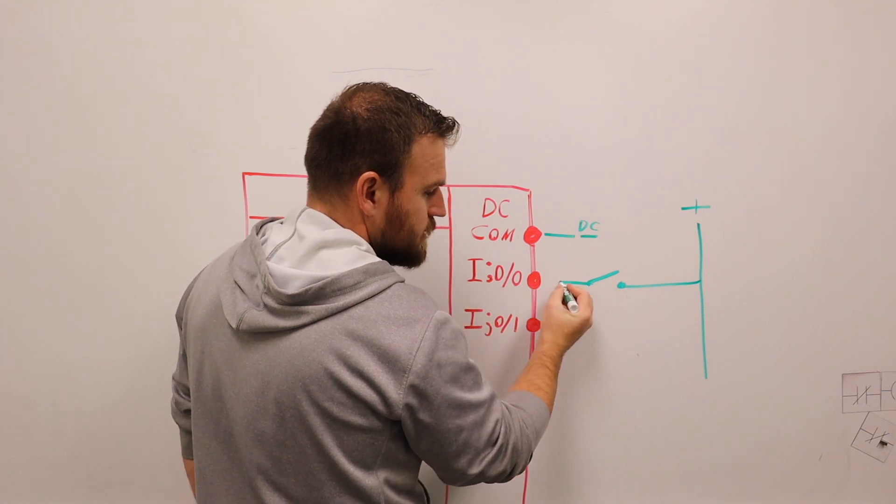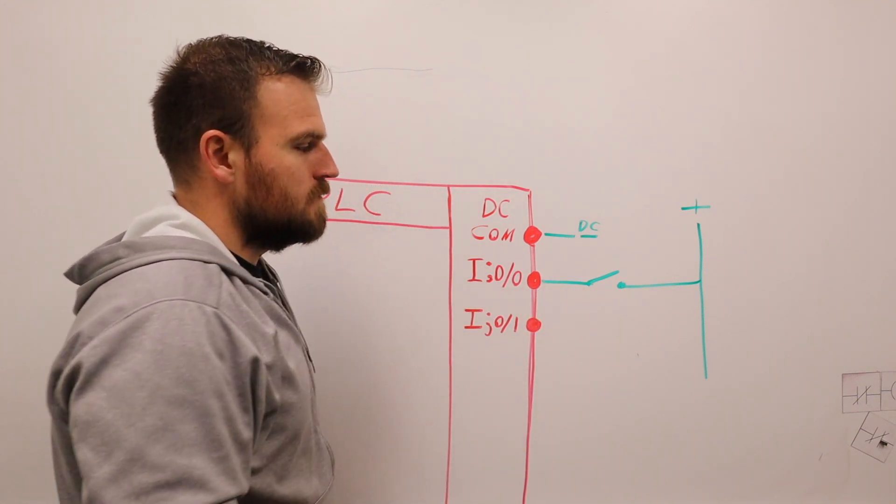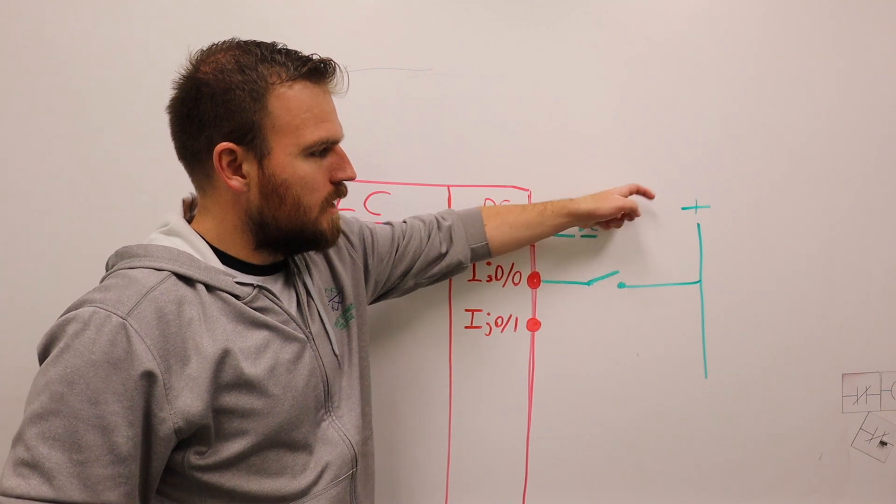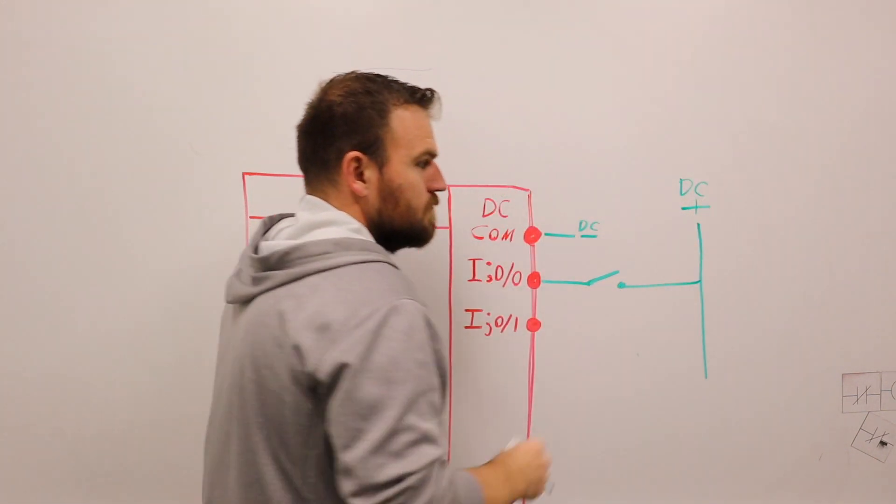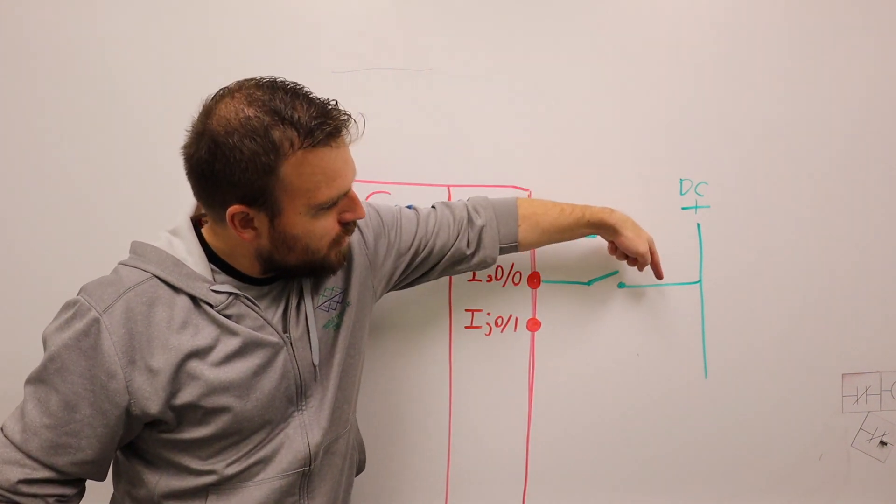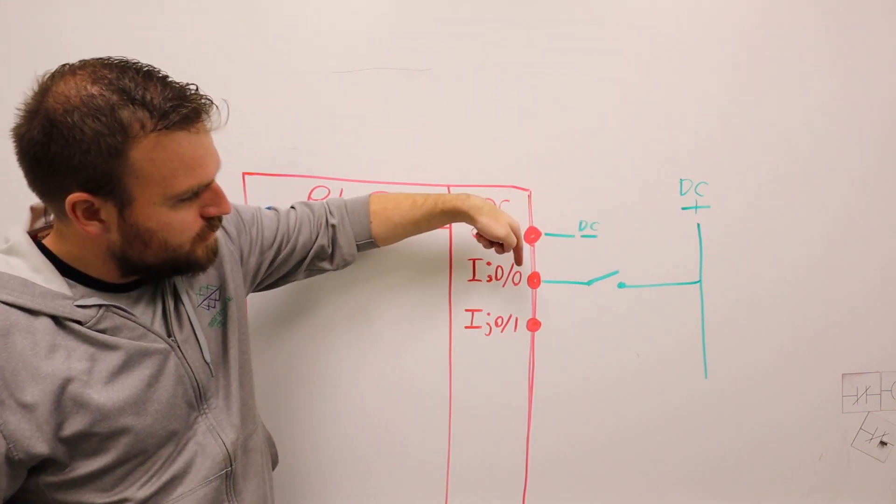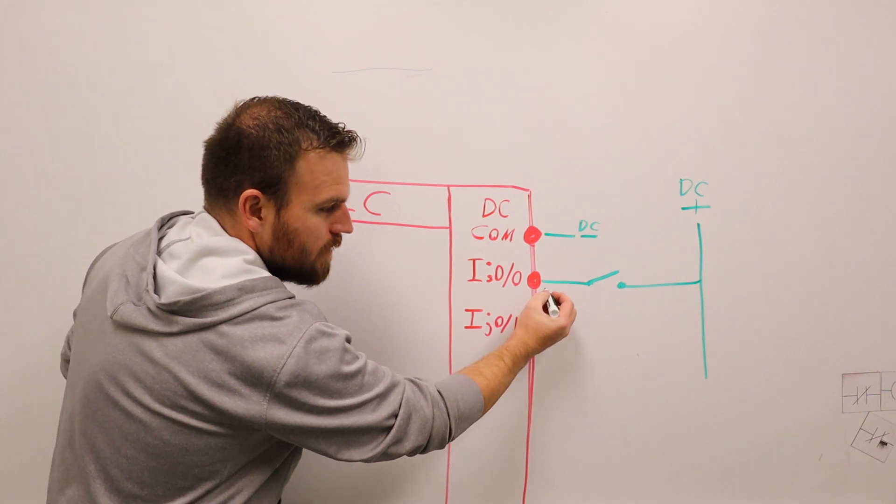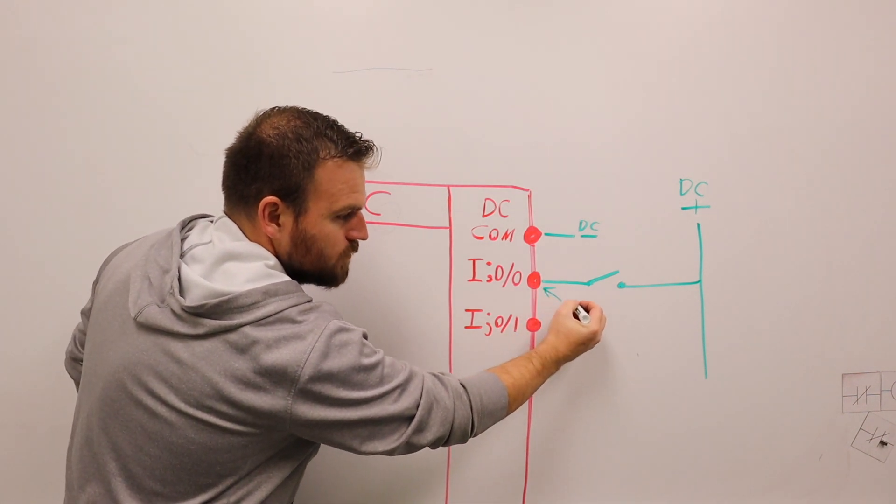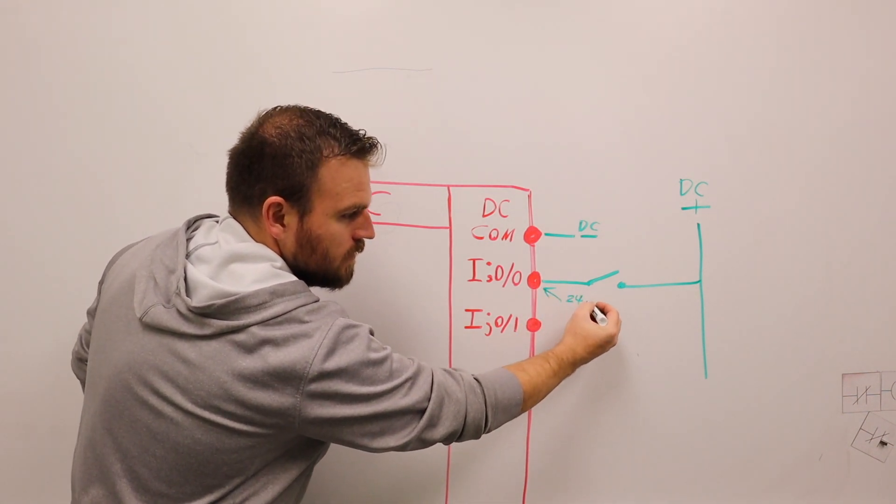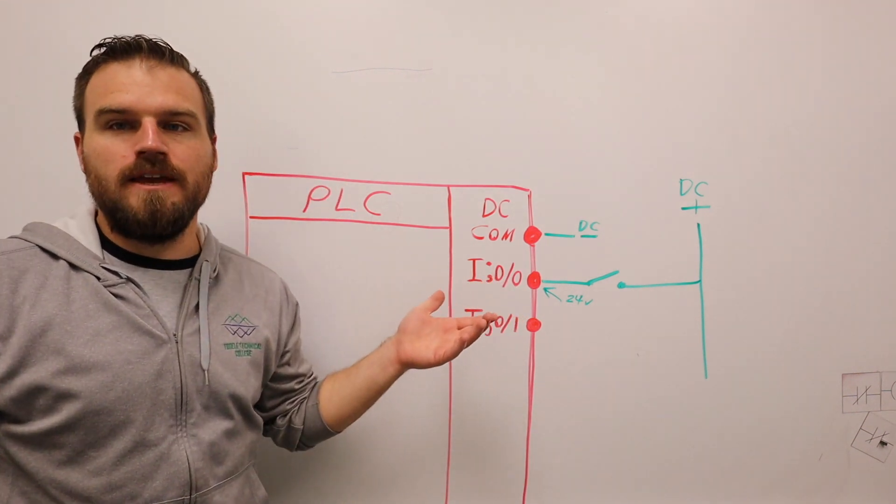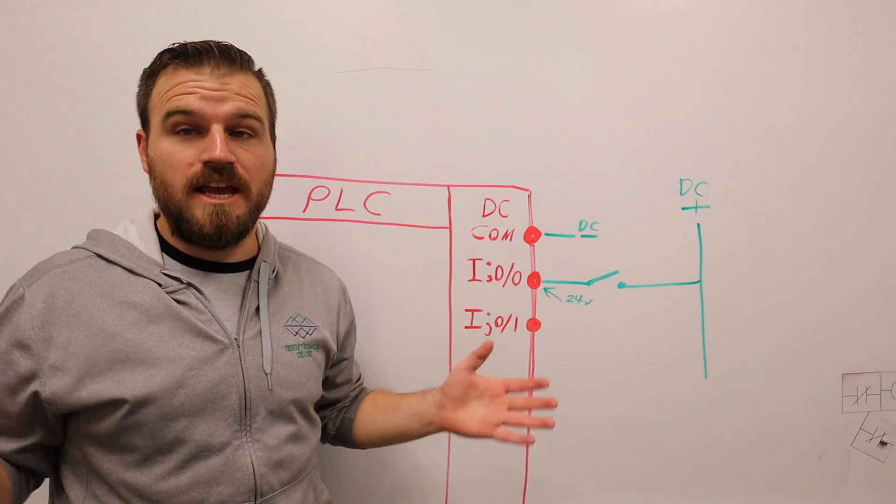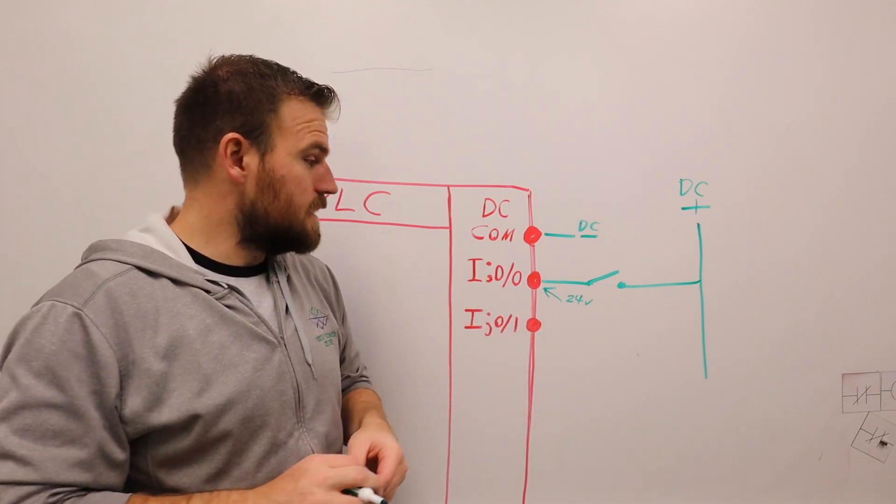It's going to come in, it's going to go to a switch. It does not have to be normally open. It's just going to be some style of switch. So when we press that button, DC power will flow through the switch into the terminal. Meaning right here, if I point an arrow, we'll have 24 volts. If it doesn't see 24 volts, it's not going to turn anything on. It's not going to change anything. It's not going to see anything.